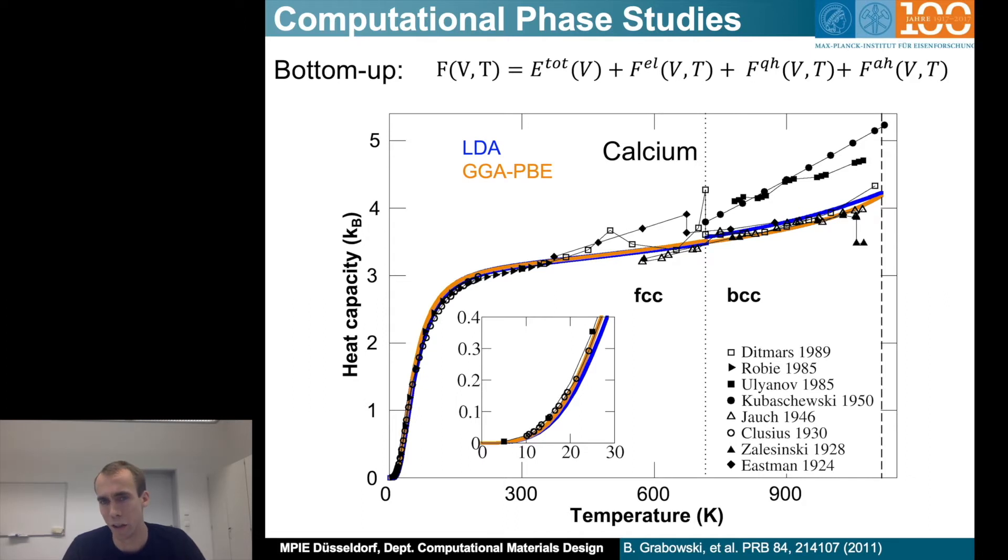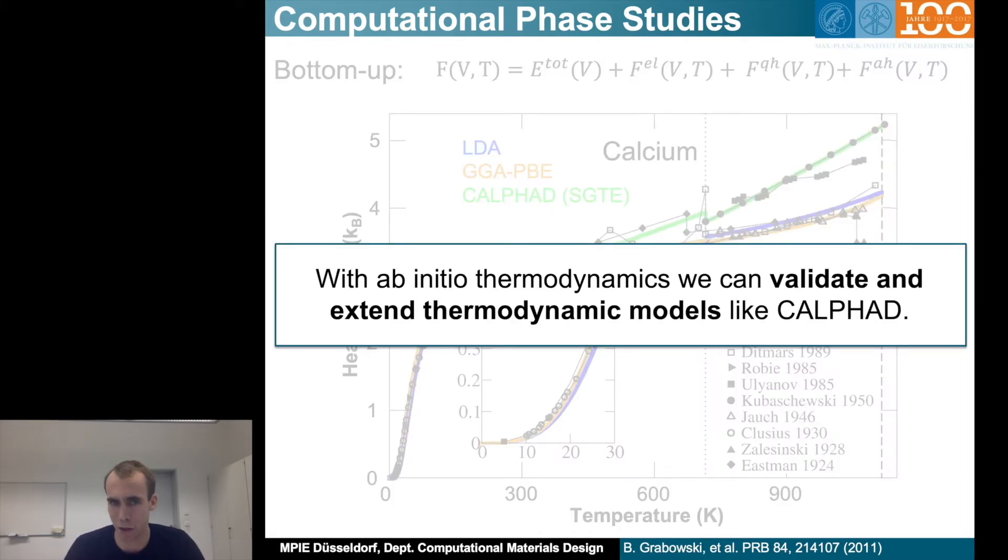In particular for the BCC phase we can see that the theoretical results agree with one branch of the experiment while the other branch they don't agree. This is important because previously the CALPHAD database trusted the upper branch, and by proving that the theoretical results agree with the lower branch, we were able to convince the people who distribute the CALPHAD database to update their recommendations and follow this lower branch. So we are now really at the stage where we can use ab initio thermodynamics or density functional theory to calculate thermodynamic properties to validate and extend thermodynamic models like the CALPHAD database.